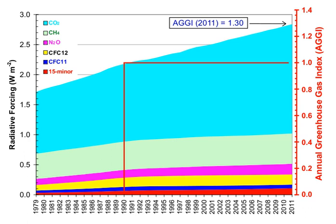One study using evidence from stomata of fossilized leaves suggests greater variability, with carbon dioxide mole fractions above 300 ppm during the period 7–10,000 years ago, though others have argued these findings more likely reflect calibration or contamination problems. Because of the way air is trapped in ice, these figures represent averages of atmospheric concentrations of up to a few centuries rather than annual or decadal levels.